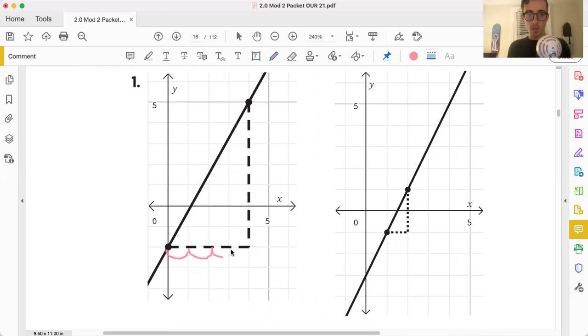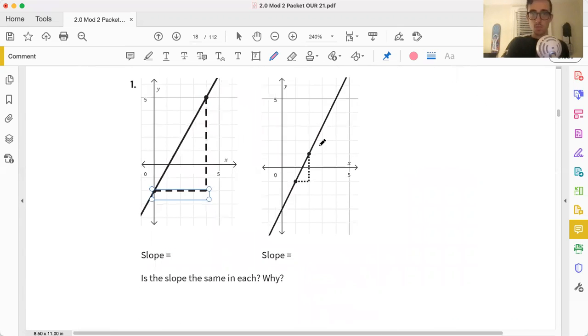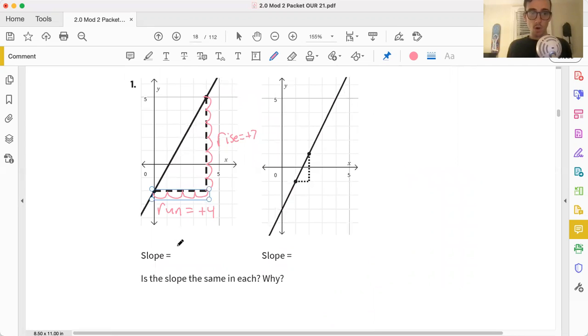This is a run of 1, 2, 3, 4. Since we went from left to right, it's a run of positive 4. Now we're moving on up with a rise. I didn't even count how many. What was it? 7. So our rise in this case is positive 7. So when it's all said and done, we're always taking our rise over our run. So we'll just hold on to our slope of 7 fourths for now.